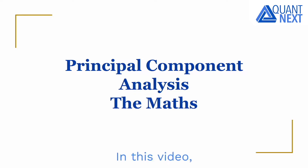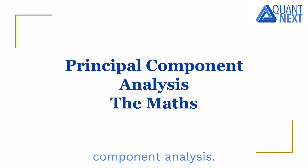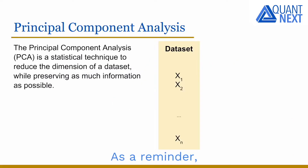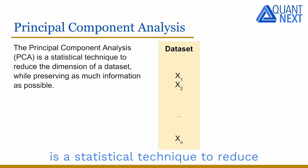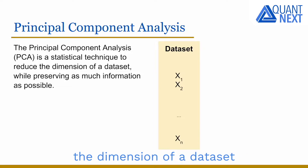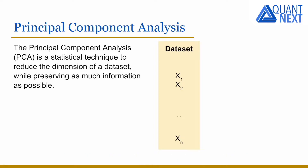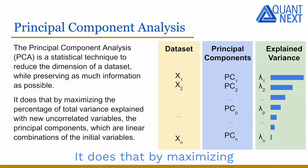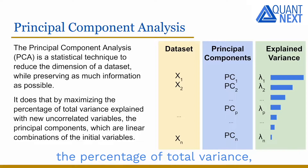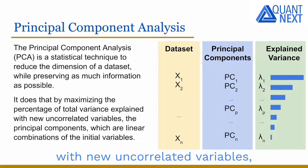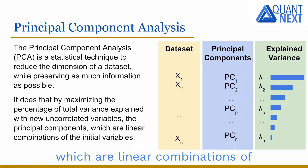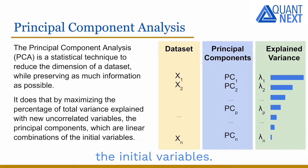Hi everyone! In this video, we will look at the mathematics behind principal component analysis. As a reminder, principal component analysis, or PCA, is a statistical technique to reduce the dimension of a dataset while preserving as much information as possible. It does that by maximizing the percentage of total variance which is explained with new uncorrelated variables, the principal components, which are linear combinations of the initial variables.